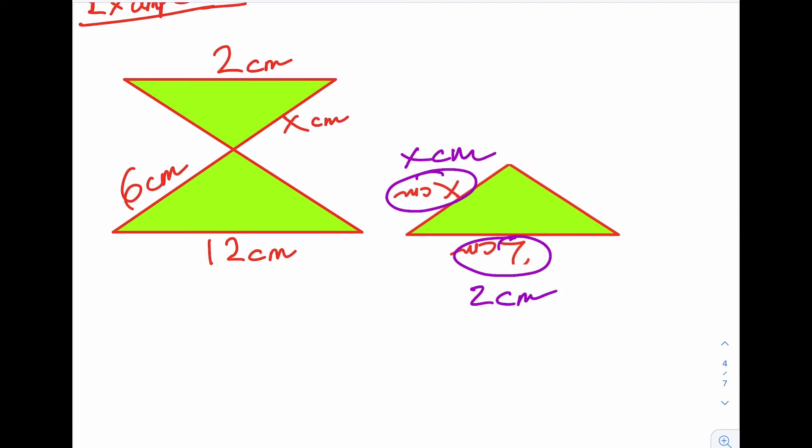I'm looking for my scale factor now. Now it's hard to see which triangle is which. But if you look at the sides, 2 and 12, that's the small and that's the big.